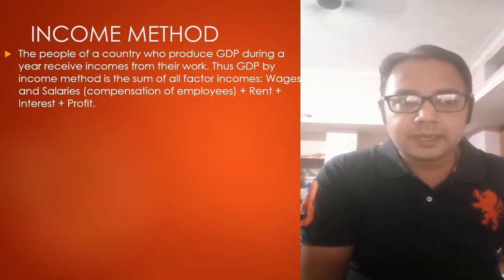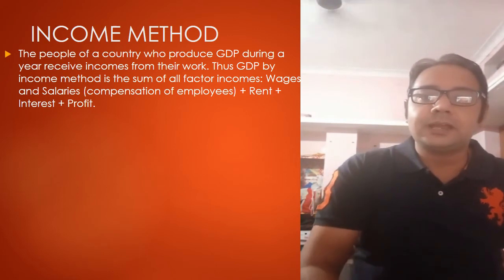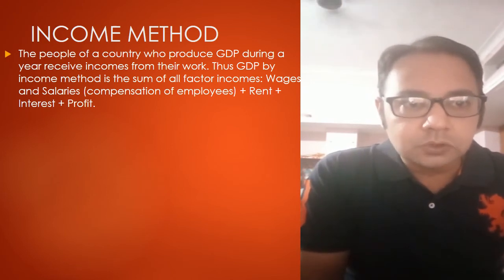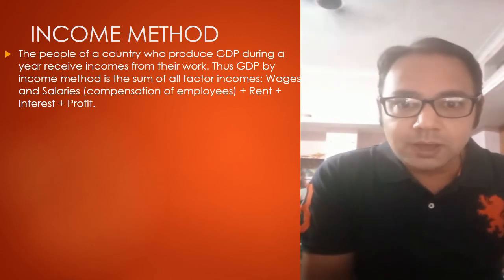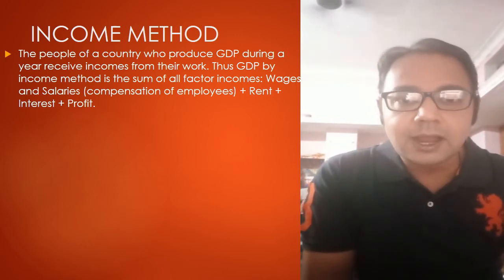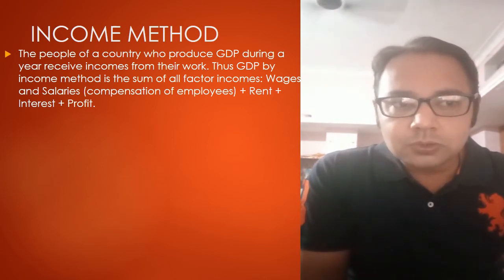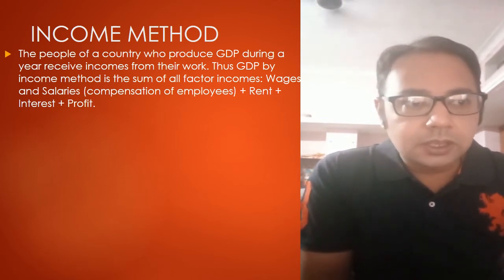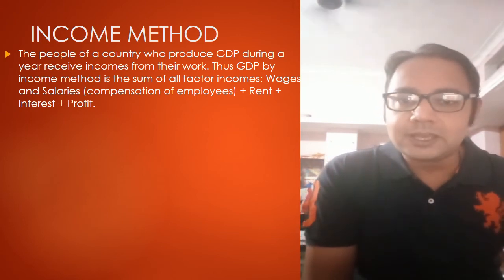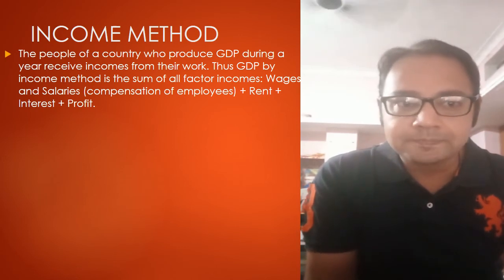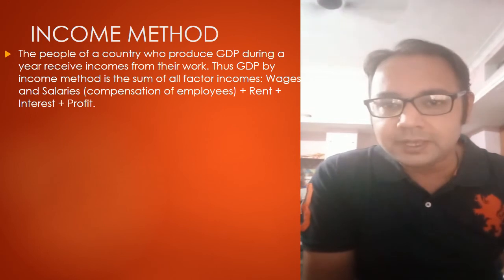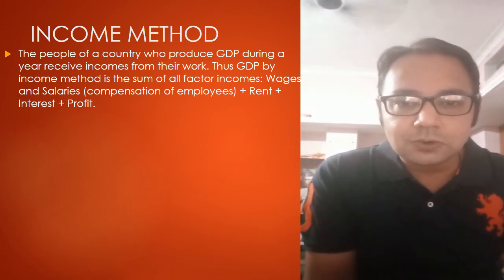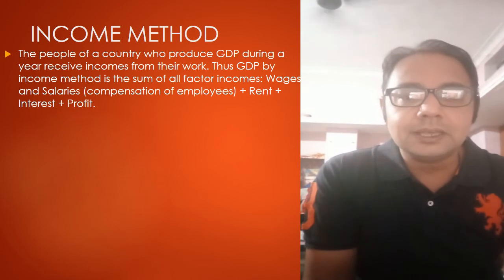Now Slide 10: the Income Method. To derive national income using the income method, the people of a country who produce GDP receive incomes from their work during a year. GDP by income method is the sum of all factor incomes: wages and salaries, rent, interest, and profit — or equivalently, land, labor, capital and entrepreneurship. Adding these four things gives us national income easily derived by the income method.